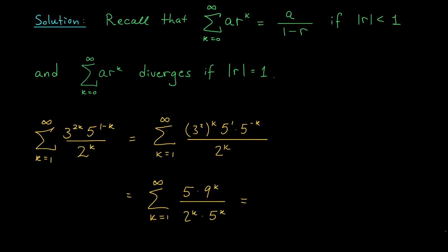Now we're starting to look a lot more like a geometric series. I could write this as the sum from k equals 1 to infinity of 5 times 9 over 10 all to the power of k.